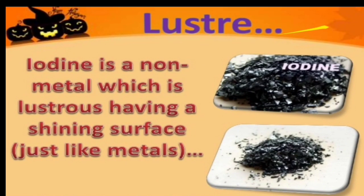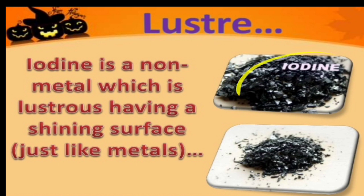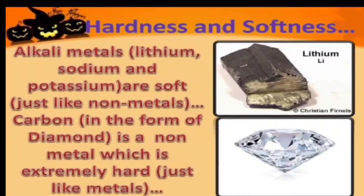Next, luster property: all non-metals are non-lustrous, but one non-metal shows luster — that is iodine. Iodine is a non-metal which is lustrous, having a shining surface just like metals. Please remember this: iodine is the exceptional non-metal that shows luster.